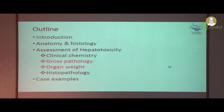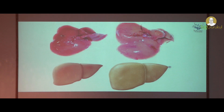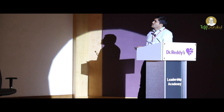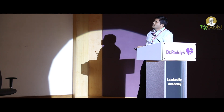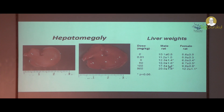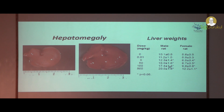Coming to the gross pathology and organ weight, this is to show hepatomegaly when you see enzyme induction. You can see the increase in the size of the liver. For liver you should always take the relative weight, that is relative to body weight, while interpreting the data, because liver weight is directly proportional to body weight. If there is an increase in body weight there will be a proportional increase in liver weight as well.